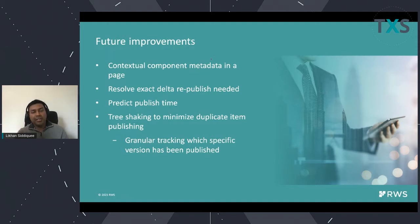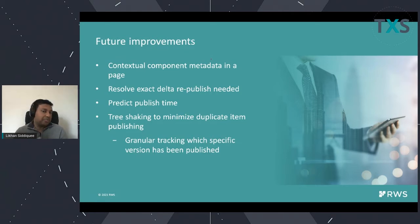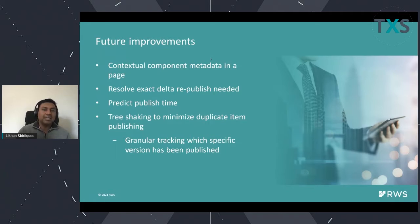When you are requesting a page from the GraphQL API, you get the components, and for each component you have contextual metadata that can drive your web application. If you have different delivery channels — for web you can use that contextual metadata, for mobile apps you probably won't. Any change to the contextual metadata does not impact the data in the component, and vice versa. This means when you change the component itself, you only need to republish the component, not the page itself.